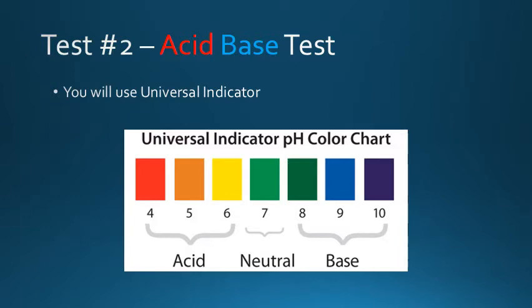The second test you'll do is the acid base test using a universal indicator. There's only two colors you're really going to be looking for, red and purple.